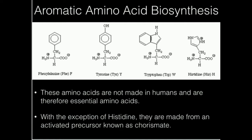Out of the four aromatics — phenylalanine, tyrosine, tryptophan, and histidine — only histidine does not use the same precursor. Phenylalanine, tyrosine, and tryptophan are all going to come from the same precursor, known as chorismate. We're first going to look at the synthesis of chorismate and then individually the synthesis of those three.